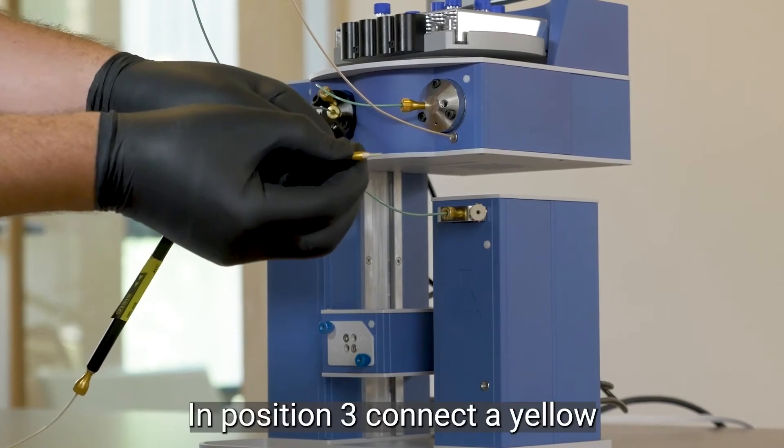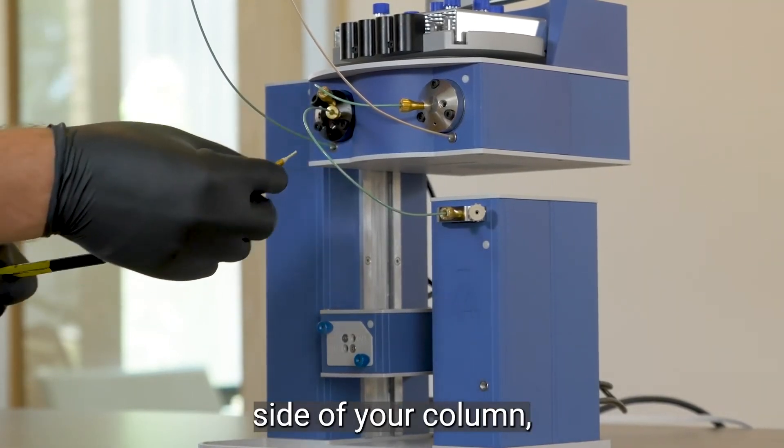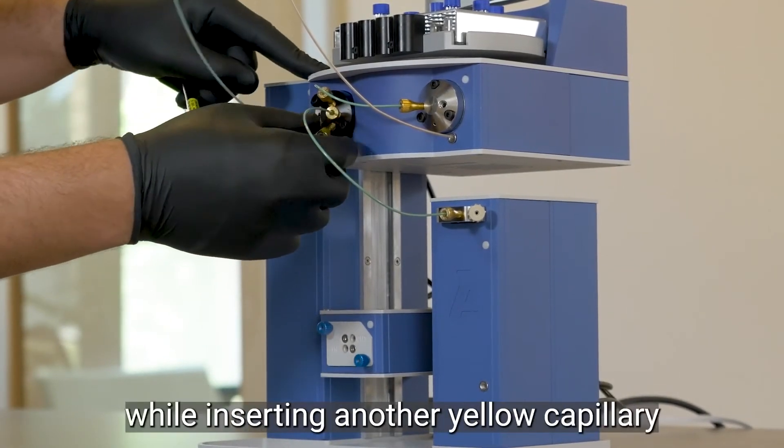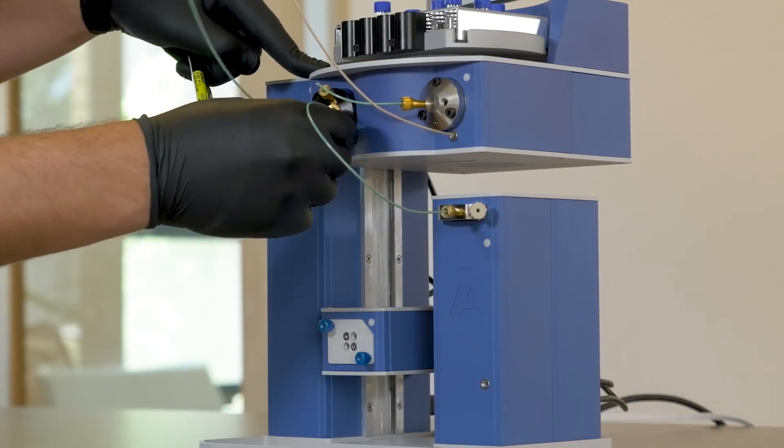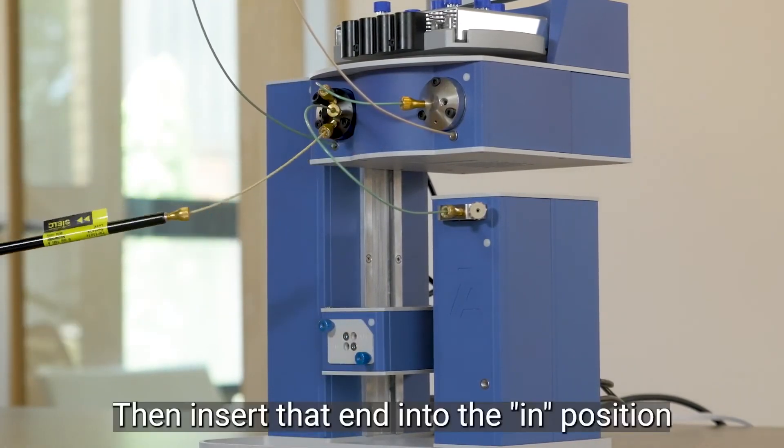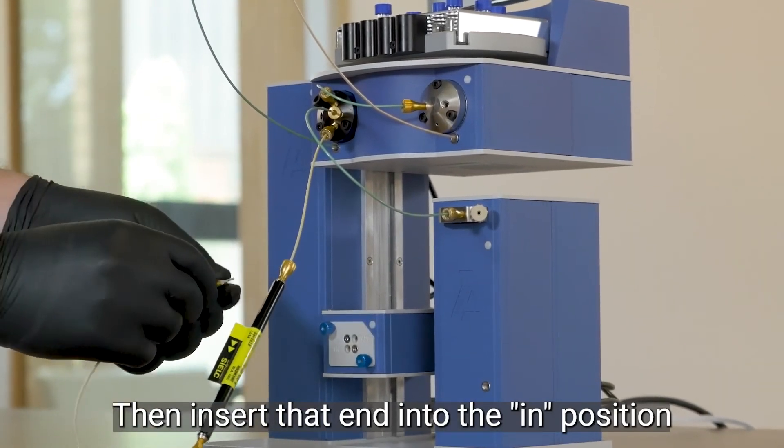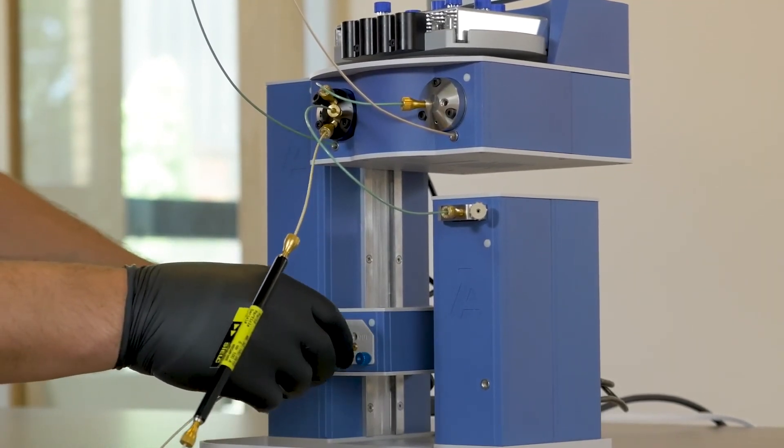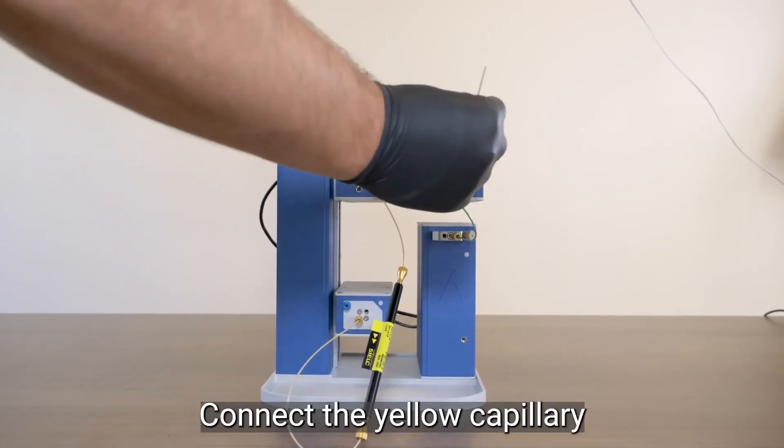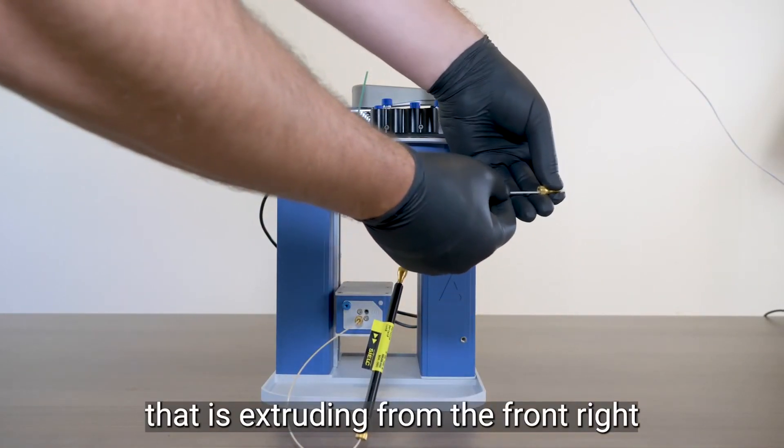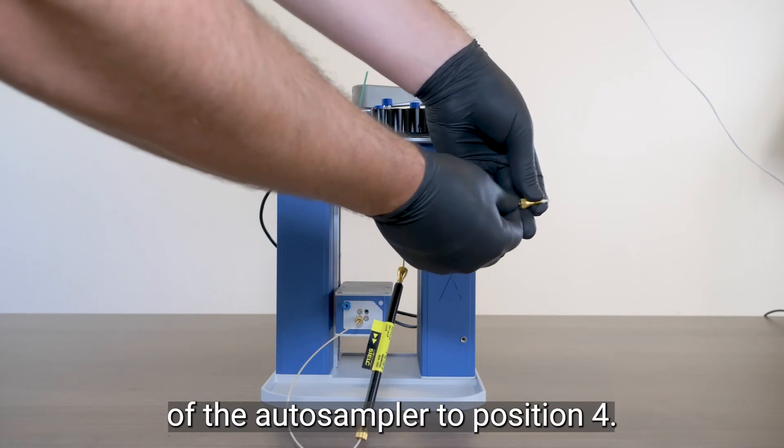In position three, connect a yellow capillary to the correct side of your column, while inserting another yellow capillary to the other end of the column. Then insert that end into the in position of the detector. Connect the yellow capillary that is extruding from the front right of the Auto Sampler to position four.